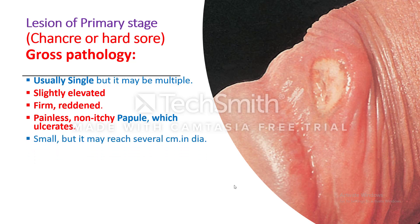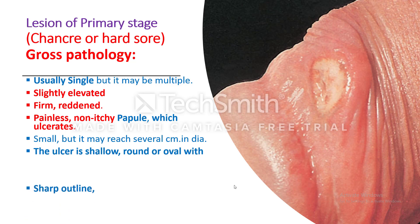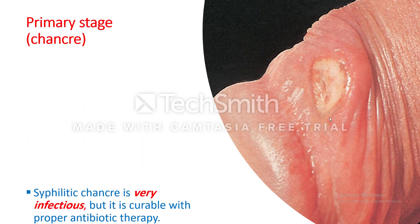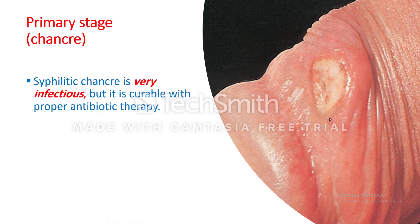The chancre is usually small but may reach several centimeters in diameter. The ulcer is shallow, round or oval, with a sharp outline, flat edges, a clean floor, and an indurated base — the floor is what you see and the base is what you feel, indurated due to surrounding fibrosis. The syphilitic chancre is very infectious but curable with proper antibiotics, and syphilis is curable in the primary and secondary stages.